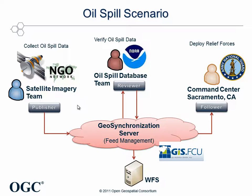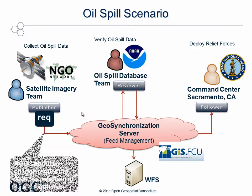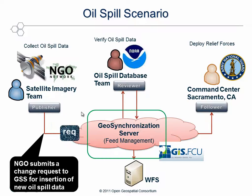In this scenario, the publisher is the satellite imagery team from an NGO, volunteering to collect oil spill data from satellites, use that imagery to prepare feature layers, and submit change requests with the features to the Geosync server provided by Feng Zhang University in Taiwan.